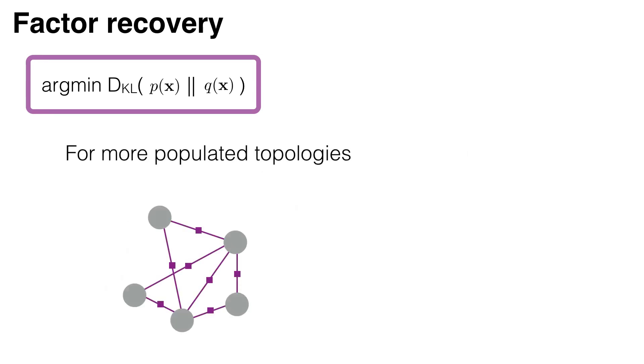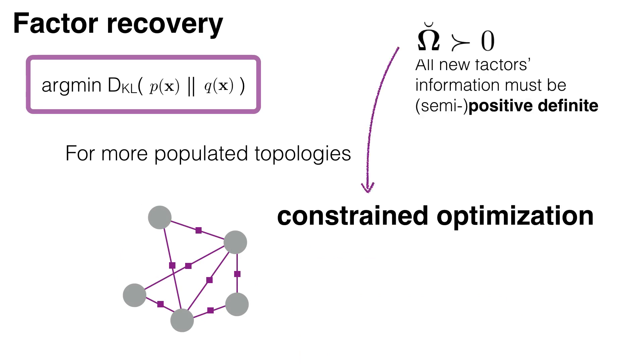For more populated topologies, the minimization becomes a constrained optimization. Then it is slower, but it provides a better approximation since more information can be encoded.